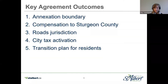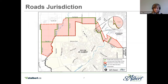In addition to the boundary, the annexation negotiating committee decided on a number of other important matters, including compensation, road jurisdiction, taxes, and a commitment to as smooth a transition as possible for former county residents. The city and the county agreed to a compensation amount of $600,000, and all roads and road rights-of-way shown in green on this map would transfer to the city. This includes all roads along the boundary of the annexation except for a portion of Township Road 544 in the northwest corner.